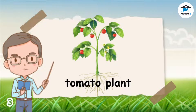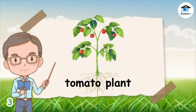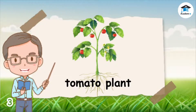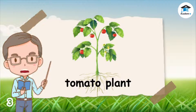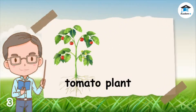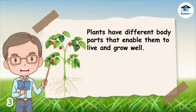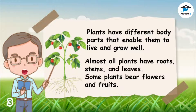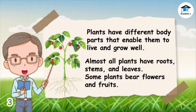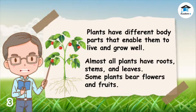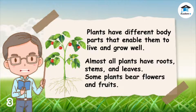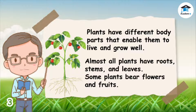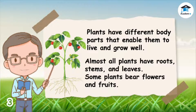Very good, it is a tomato plant. Can you describe this plant? What are the parts? Like animals, plants have different body parts that enable them to live and grow well. Almost all plants have roots, stems, and leaves. Some plants bear flowers and fruits. How would you describe its roots, stems, and leaves? What are their functions?